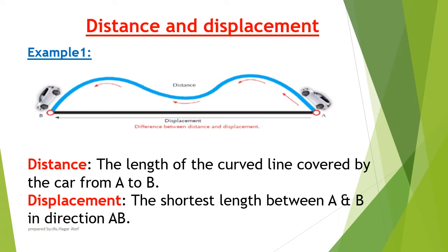So, distance is the length of the curved line covered by the car from A to B, and displacement is the shortest length between A and B in direction AB.